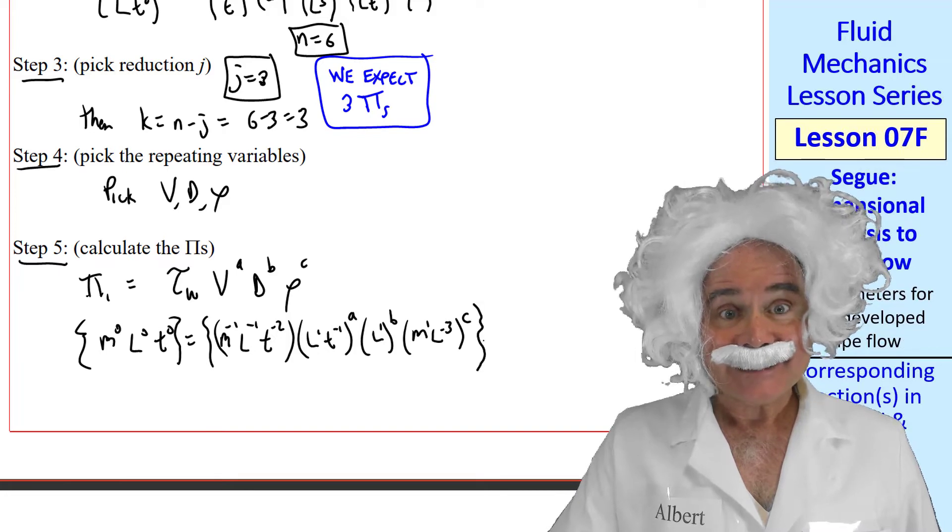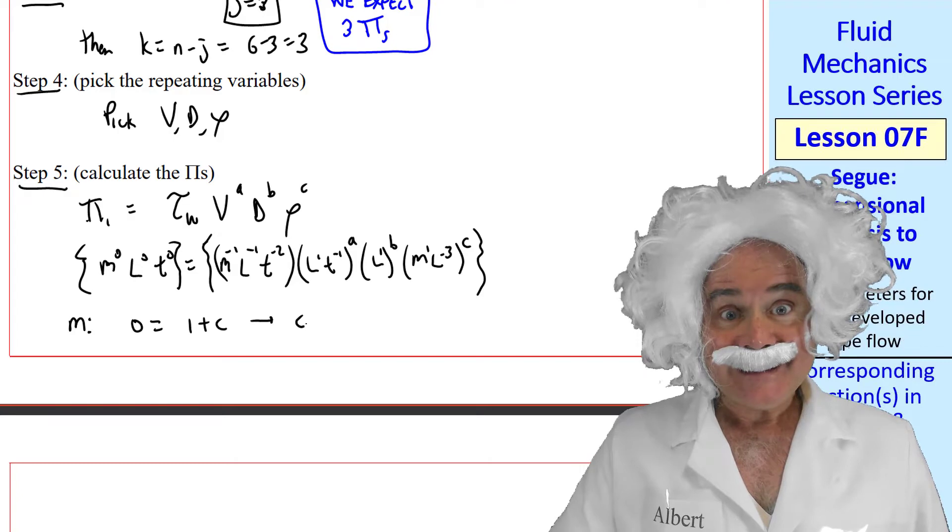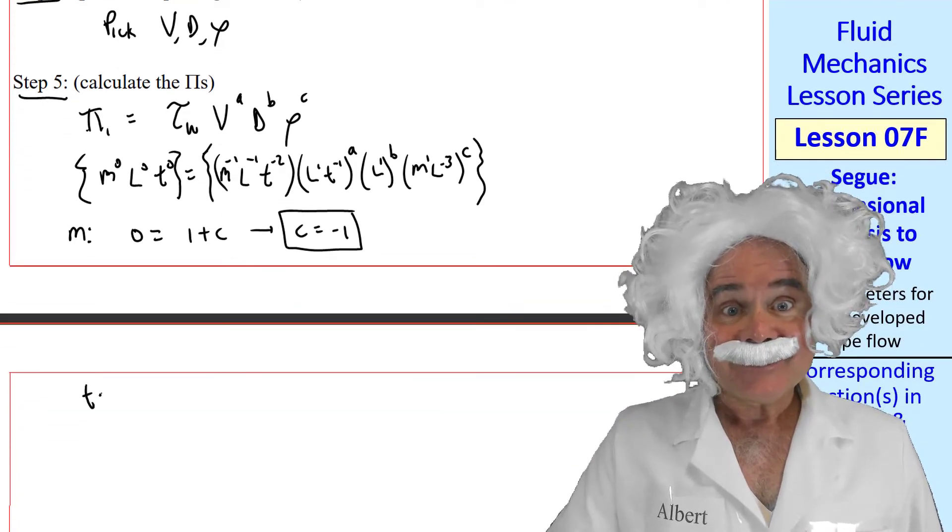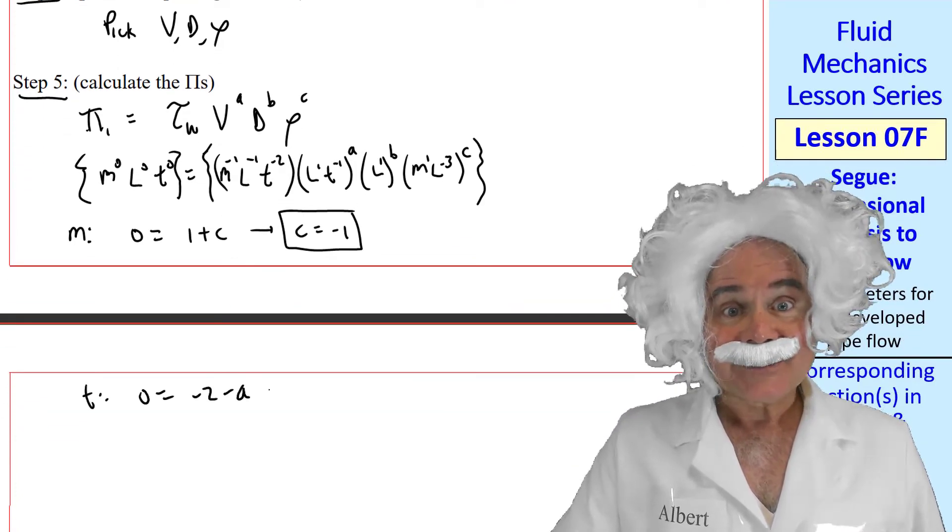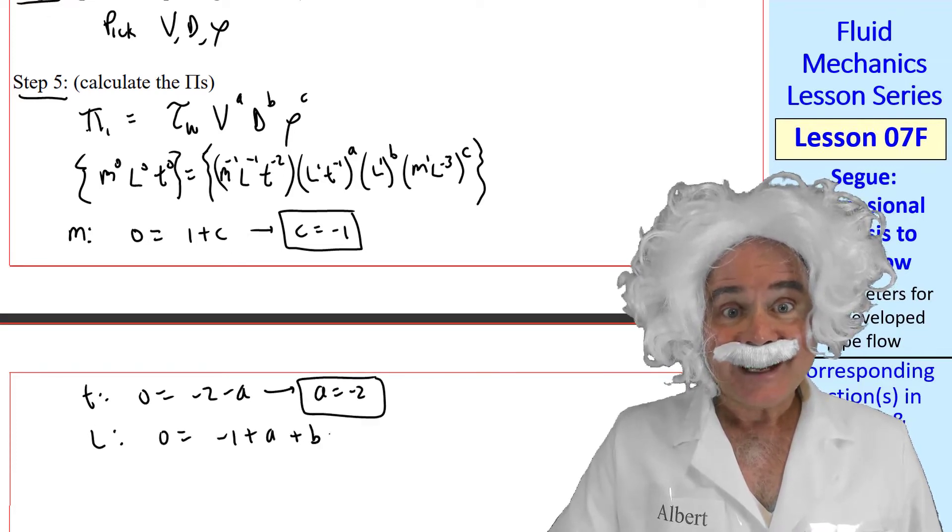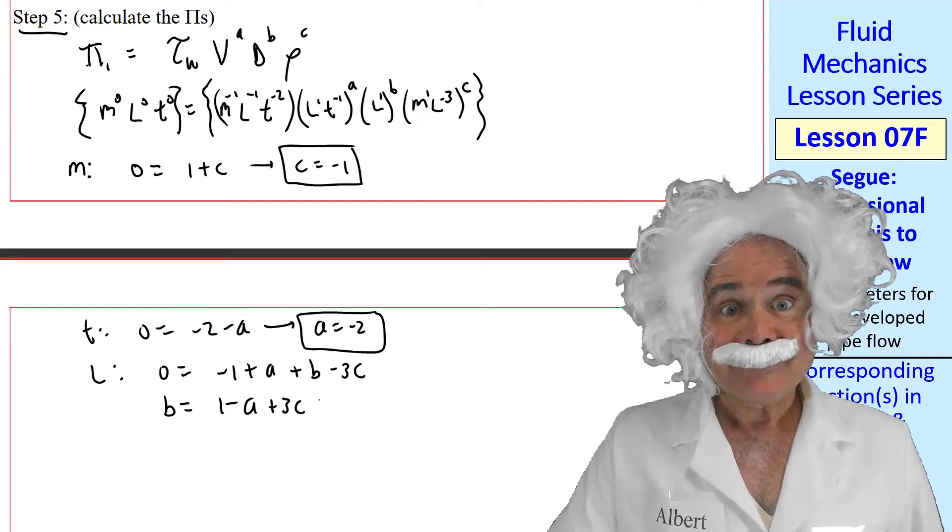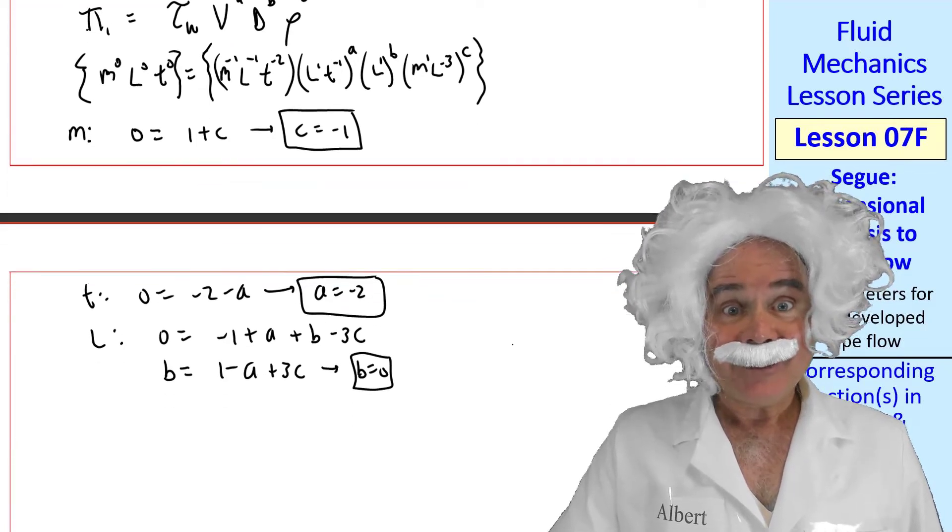Now we equate exponents. For m, 0 equals 1 plus c. Thus, c equals negative 1. For t, 0 equals negative 2 minus a. So, a equals negative 2. For l, 0 equals negative 1 plus a plus b minus 3c. But when we solve for b, we get b equals 0.